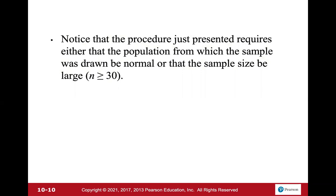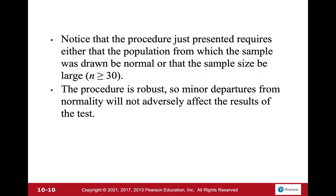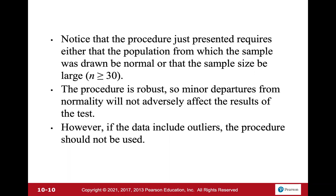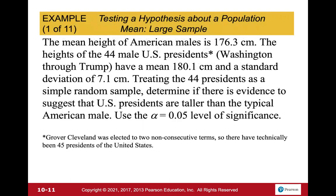The procedure requires either that the population is normal or that the sample size is large — greater than or equal to 30 is considered a large sample. The procedure is robust, so minor departures from normality will not adversely affect the results. However, if the data includes outliers, the procedure should not be used.